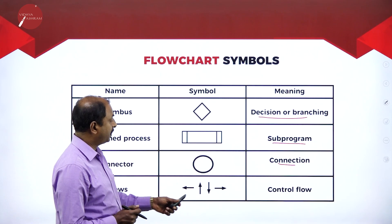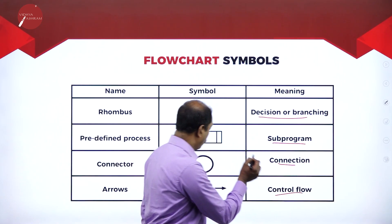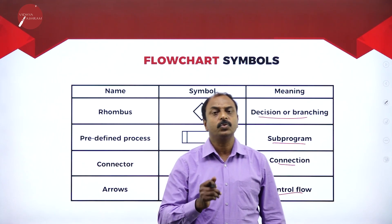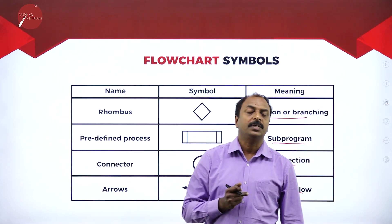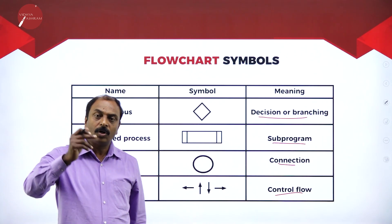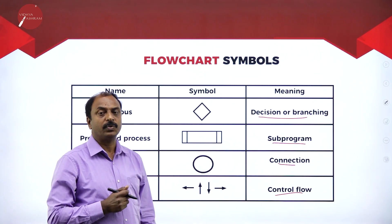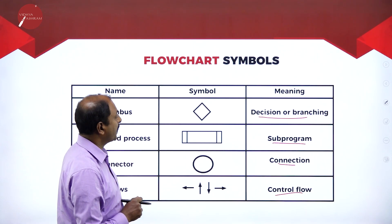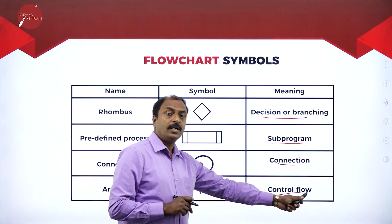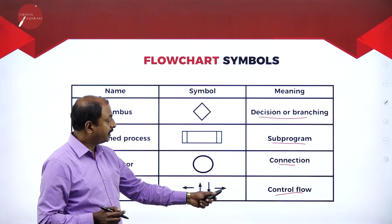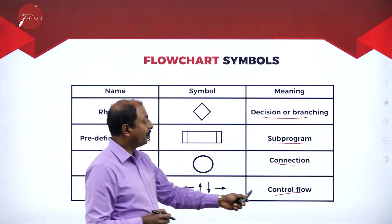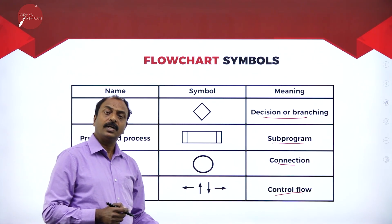Arrows represent control flow. In an algorithm we have step 1, step 2, step 3, and so on until we reach the end — indicating the flow of logic and the order of statements to be executed. Similarly, in a flowchart, arrows represent control flow — the next statement to be executed. We use four different types of arrows to represent flow of logic or control flow.